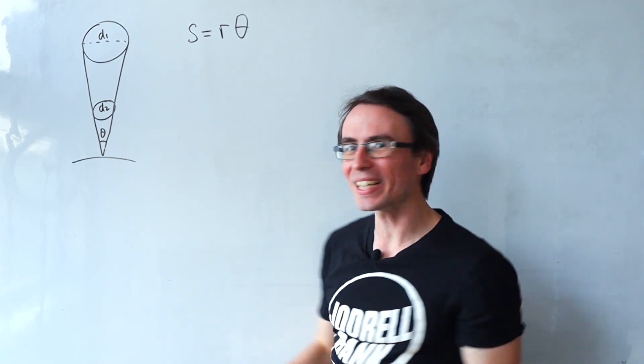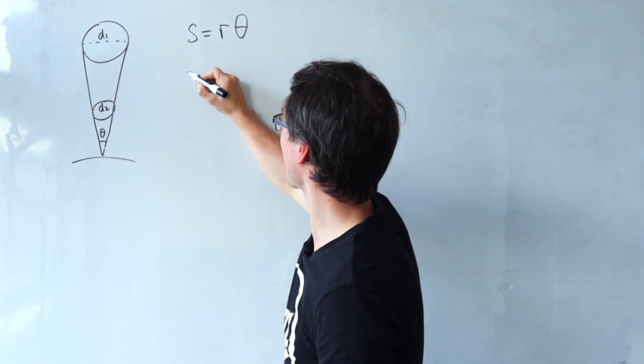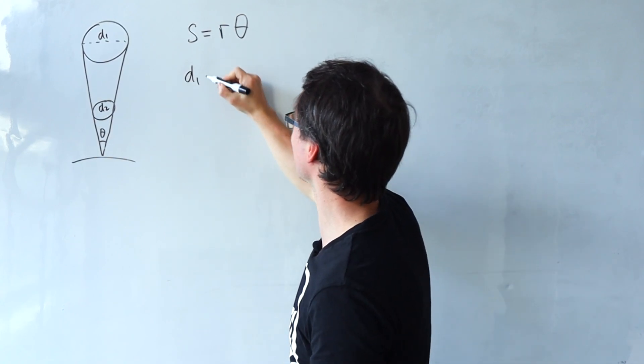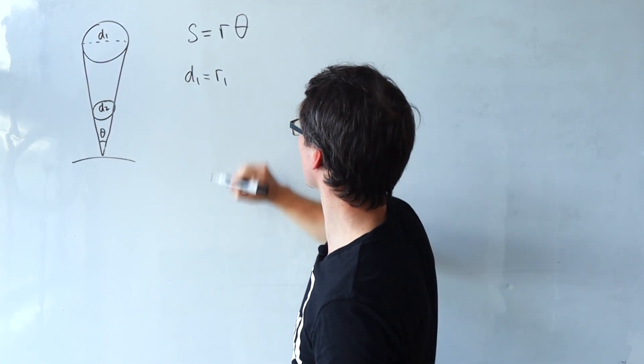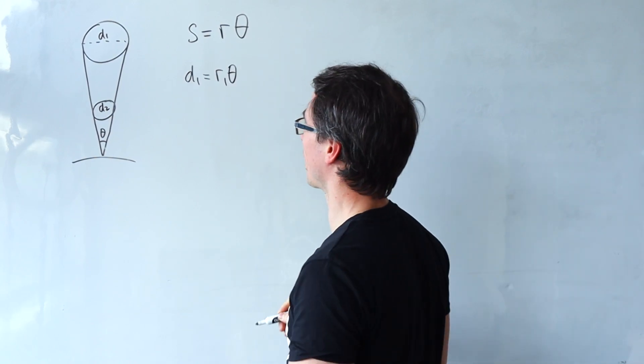Rather than the arc length I'm just going to say that this is equal to the diameter of the sun. Let's call that d1 and this will be equal to the orbital distance of the sun. Let's call that r1 times by theta.